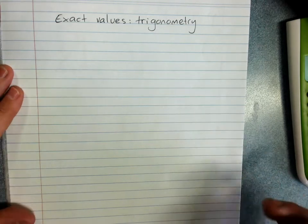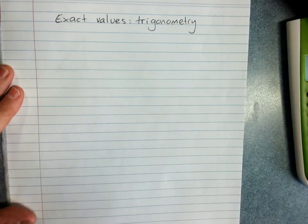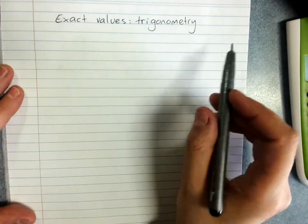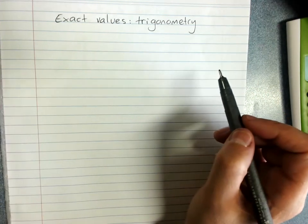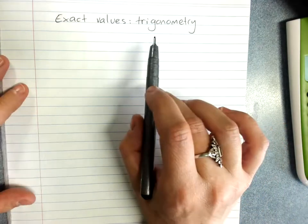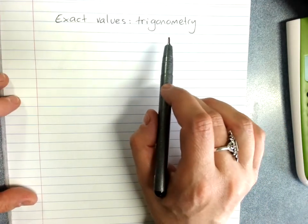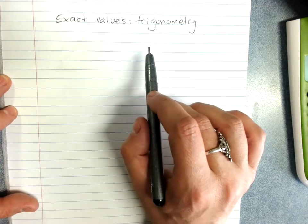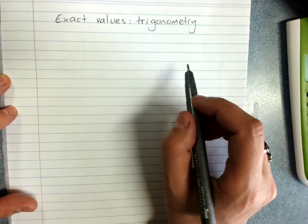Exact values in right angle trigonometry. There are three particular angles that we will get exact values for sine, cos, and tan of those angles using two special triangles.